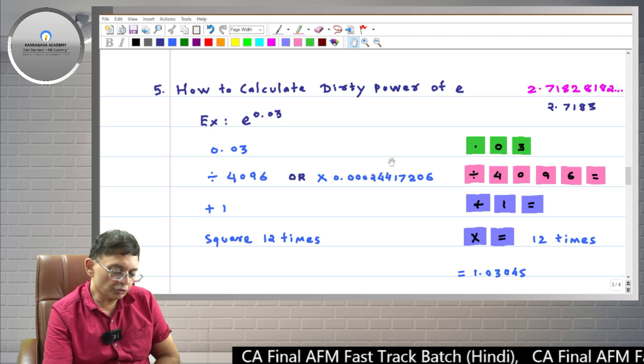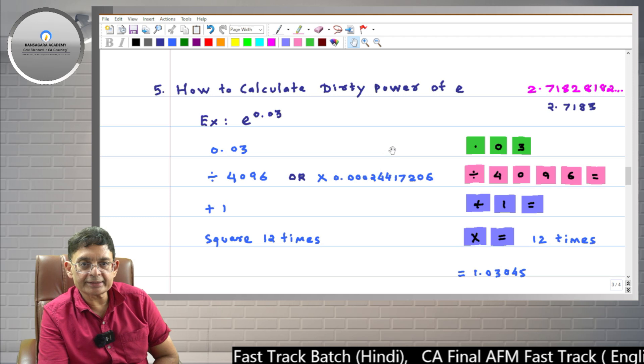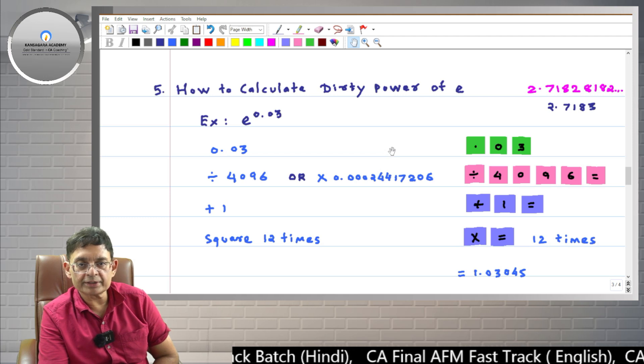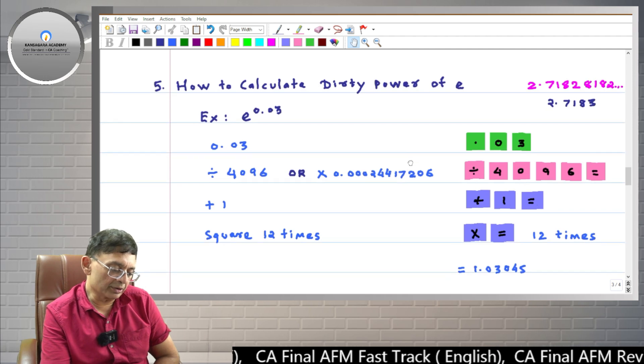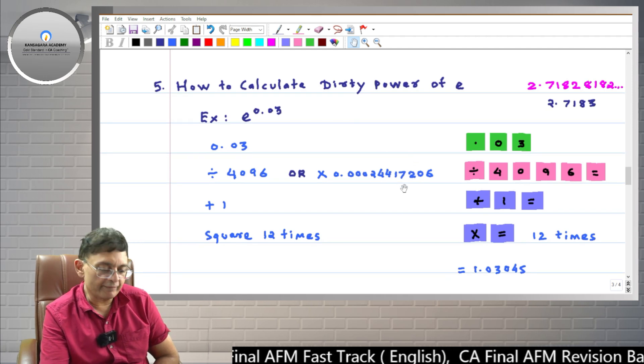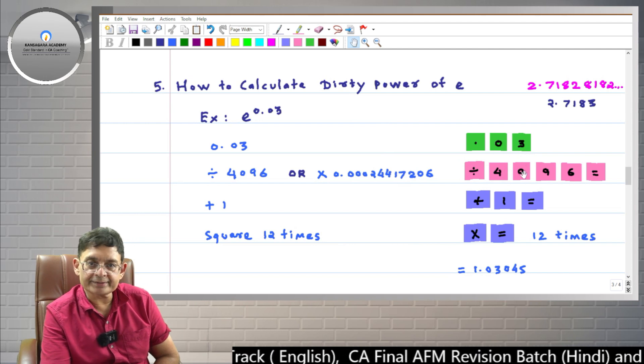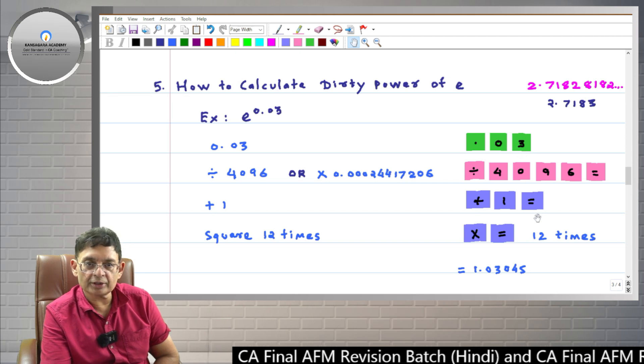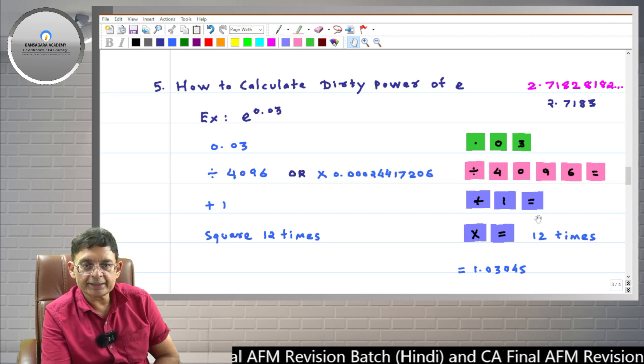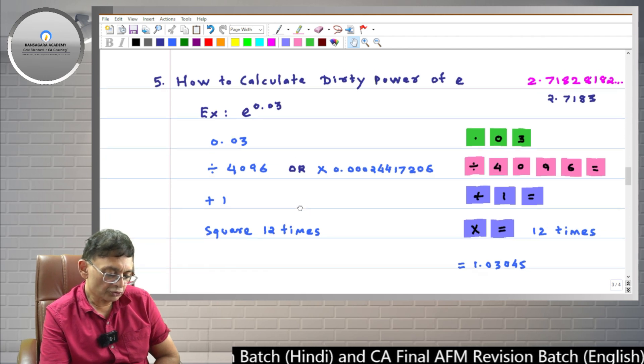Now friends, please keep open your printed charts. There is a series: complex calculations with simple calculator. Page number 2 and topic number 5. I will show that on the screen also. The keys which you have to press on the simple calculator are shown here in colorful boxes, so it is easy to understand. This is the process that we perform. So friends, let's start.